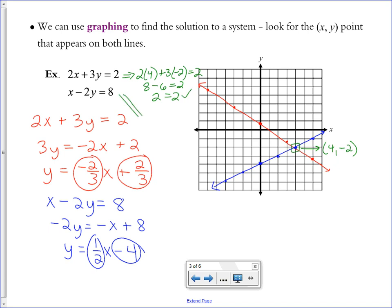Let's see if it works in the second equation. Plug in 4 for x, negative 2 for y. 4 plus 4 equals 8. Sure enough it does. And that's how I know that 4, negative 2 is the correct solution to both.